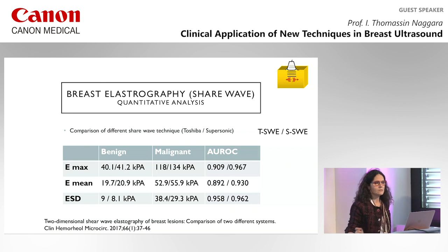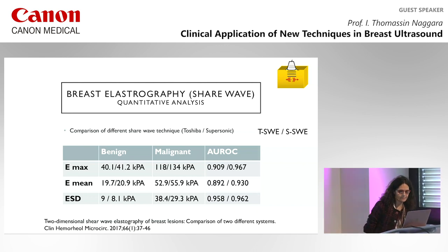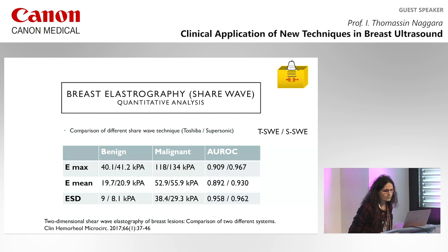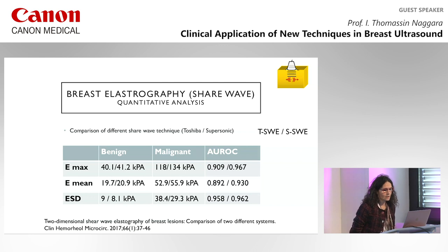Looking at different shear wave techniques in the literature, this paper compares two different systems and shows the performance is quite similar between them. The Emin is probably stronger than the Emax because it's more reproducible. Malignant lesions are around 50 kPa versus benign lesions which are around 20 kPa.